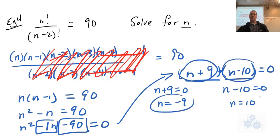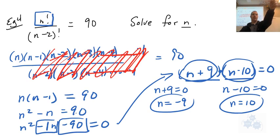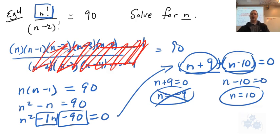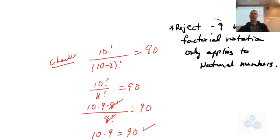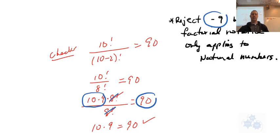Would both be valid answers? No — n cannot be negative; it has to be a natural number. So we reject n = -9. Checking n = 10: 10!÷8! — the 8! factorials cancel — and we have 10×9 = 90. That is totally true. So n = 10. That might be the toughest question you'll face in this section, and there are other examples in your textbook.